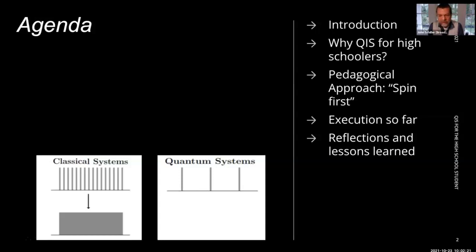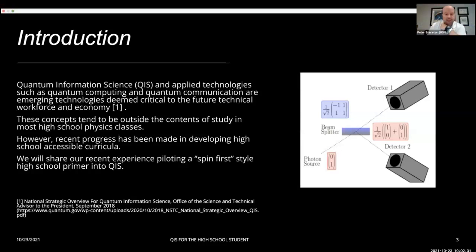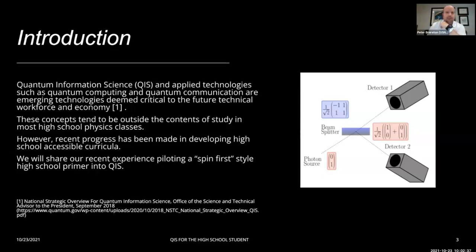We will discuss some of our pedagogical approach, what we've been able to do so far, and some of the lessons we've learned along the way. Quantum information science is broadly defined as the topics needed for applied technologies like quantum computing and quantum communication. Typically these topics have been well outside the high school or even early undergraduate remit, but there's been an explosion of availability to bring these basic topics into the early undergrad and high school.